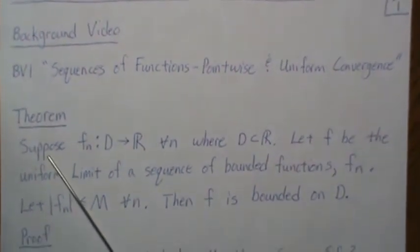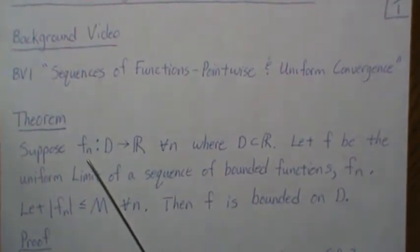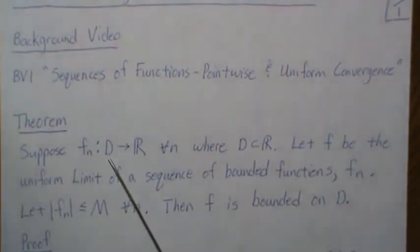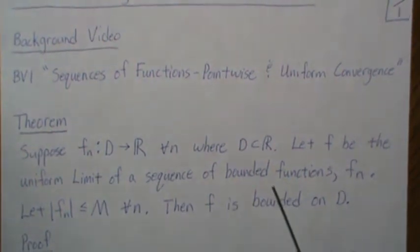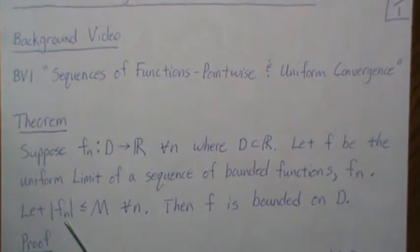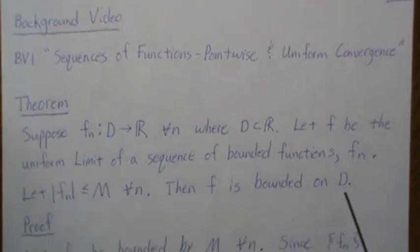Now for the theorem, suppose that we have a sequence of functions f_n that map from some set D to the real numbers for every n, where D is a subset of R. Let f be the uniform limit of a sequence of bounded functions f_n, and so that means there's some M that bounds each function f_n for all n. Then f is bounded on D also.